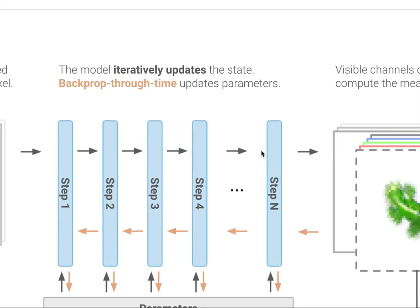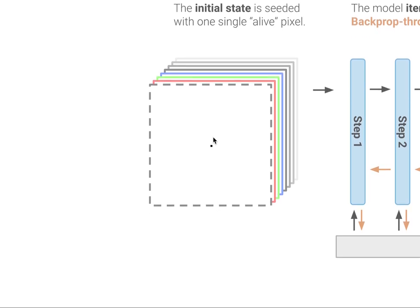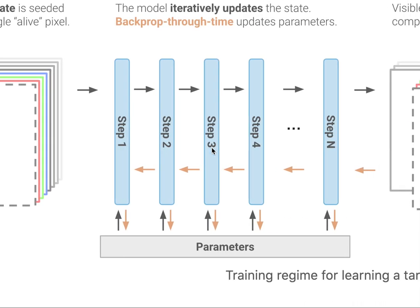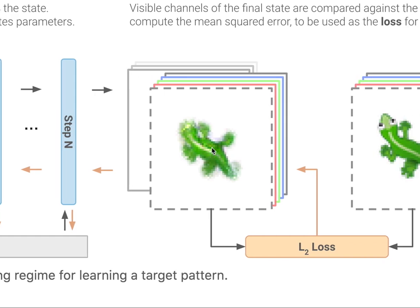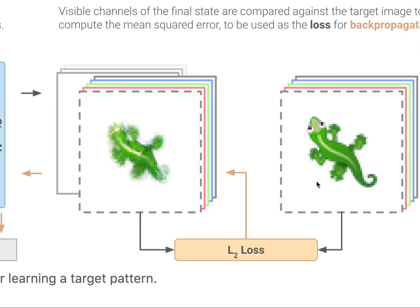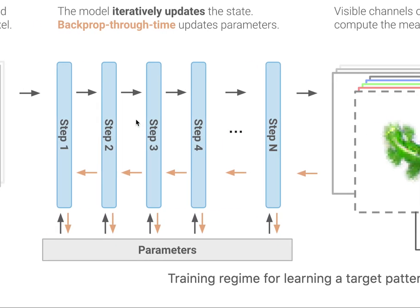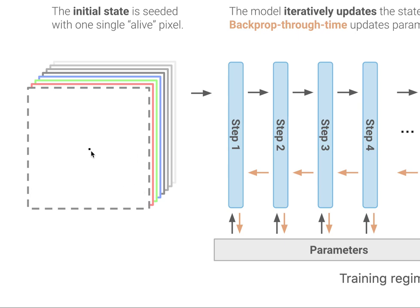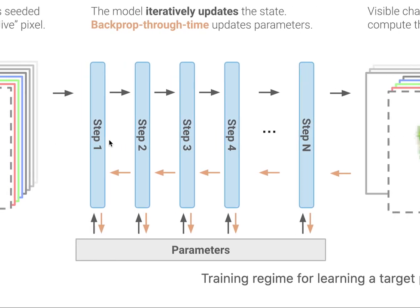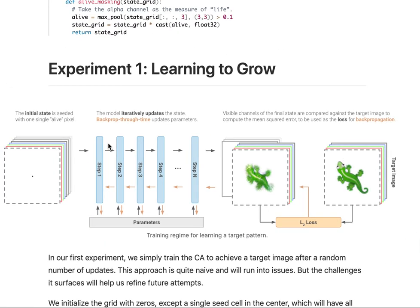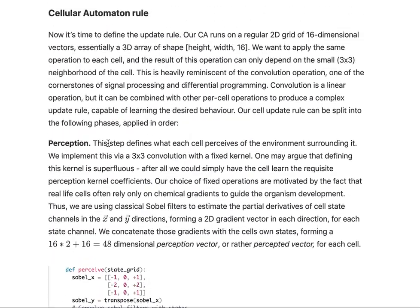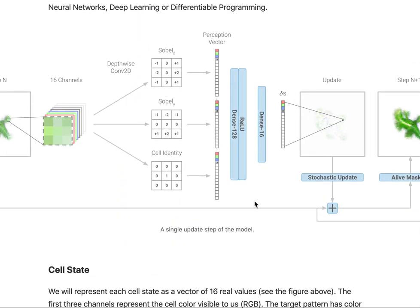You do this for multiple time steps. The initial state is simply one cell that is alive in the middle — everything else is dead — and you run this for many steps. Then at some point you get an output, and you compare the output to your desired output and compute a differentiable loss. Because the update rule is differentiable and the loss is differentiable, you can backprop through time to the original pattern and learn this update rule by backpropping through time — this is a bit like an LSTM. The residual connection is really the key to making this work over time, because otherwise you would have the problem of vanishing and exploding gradients.